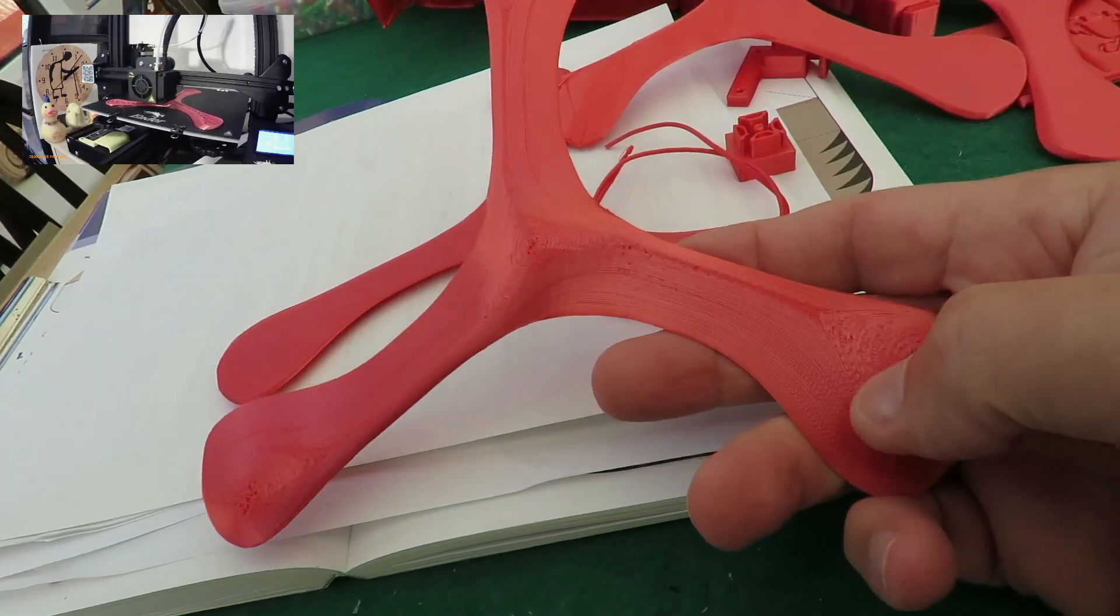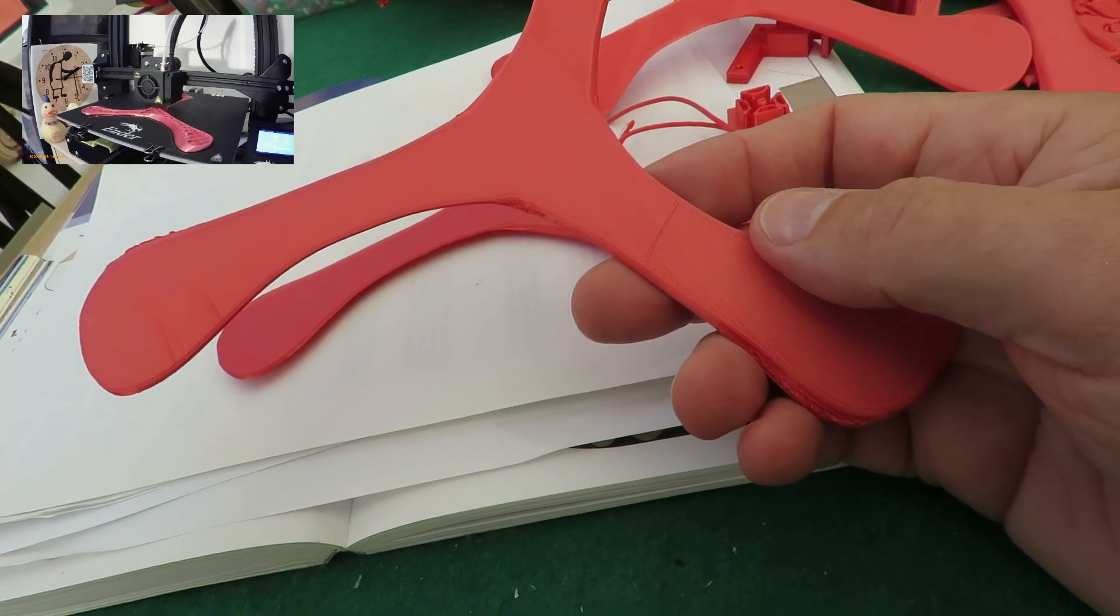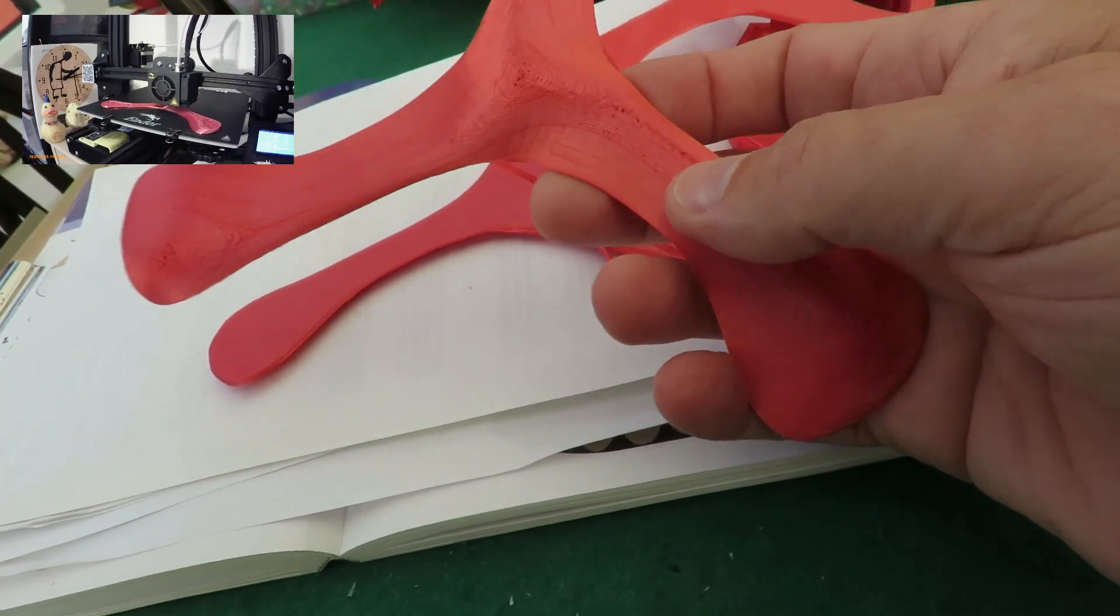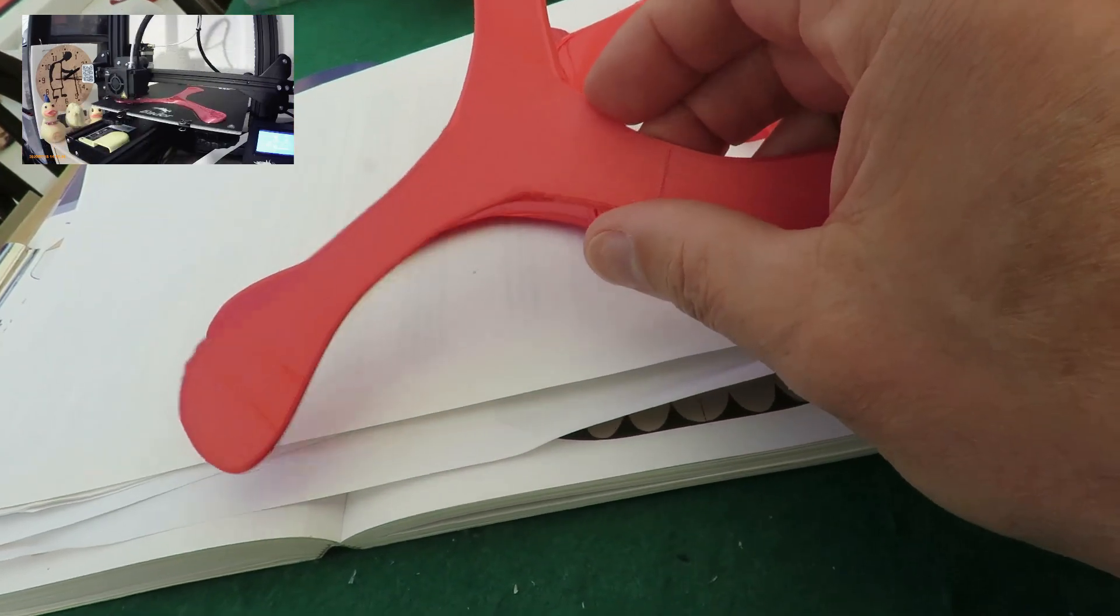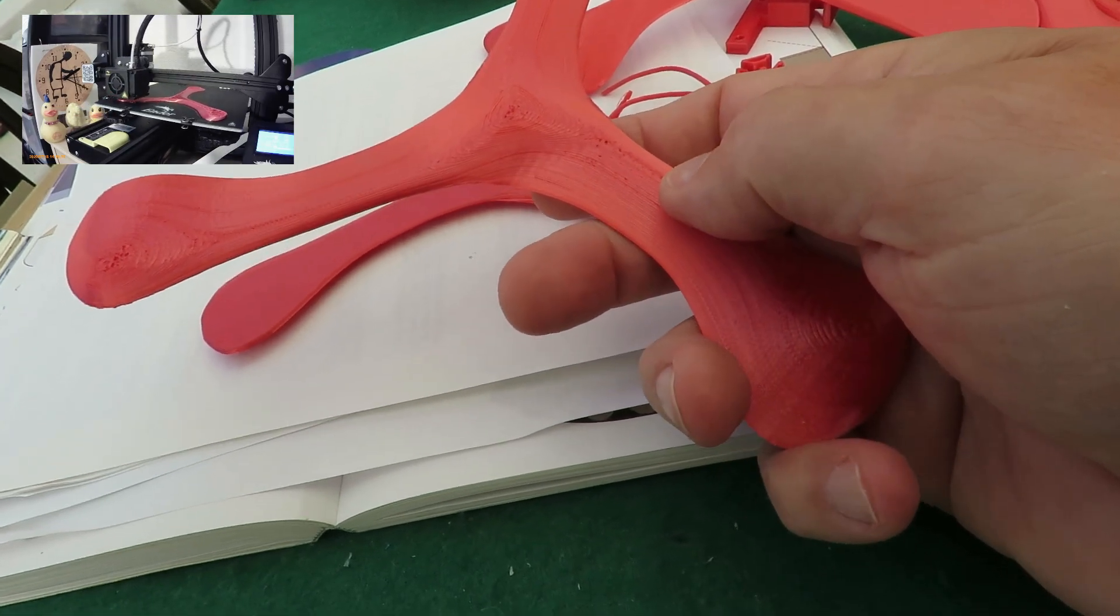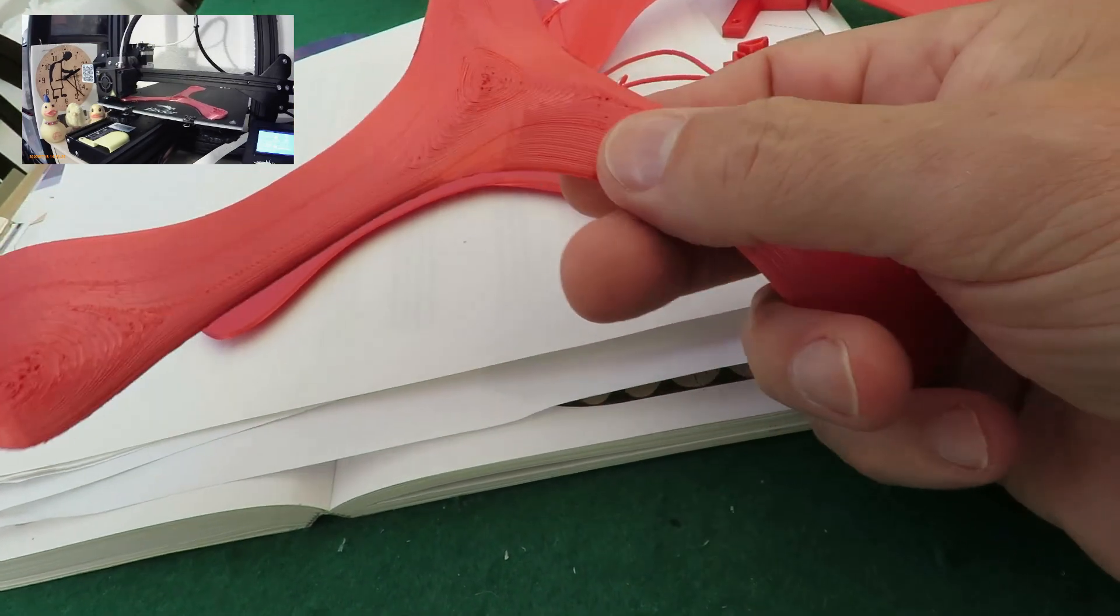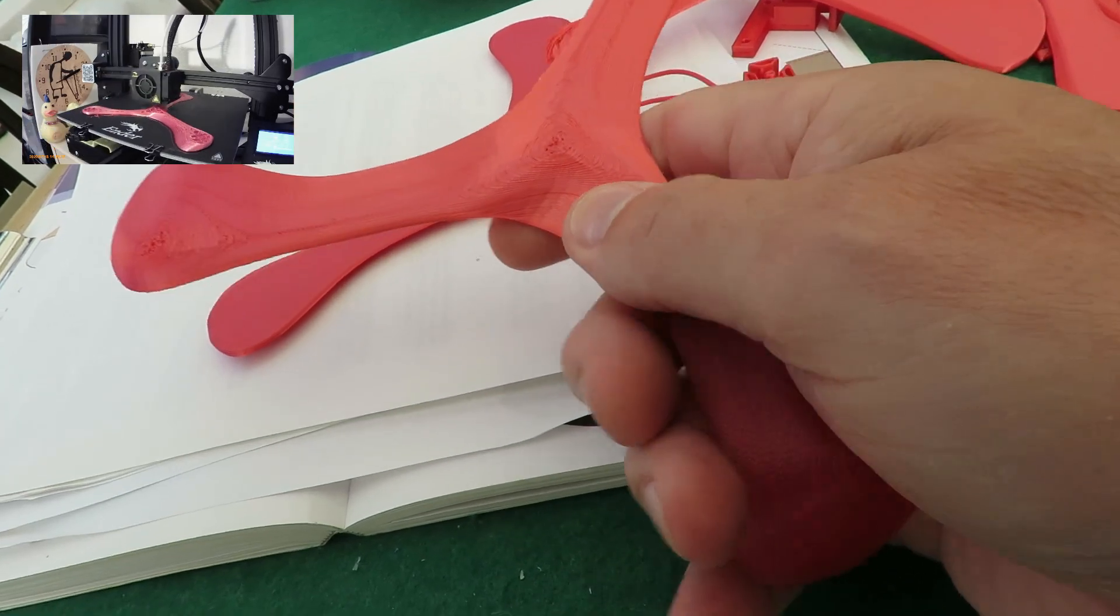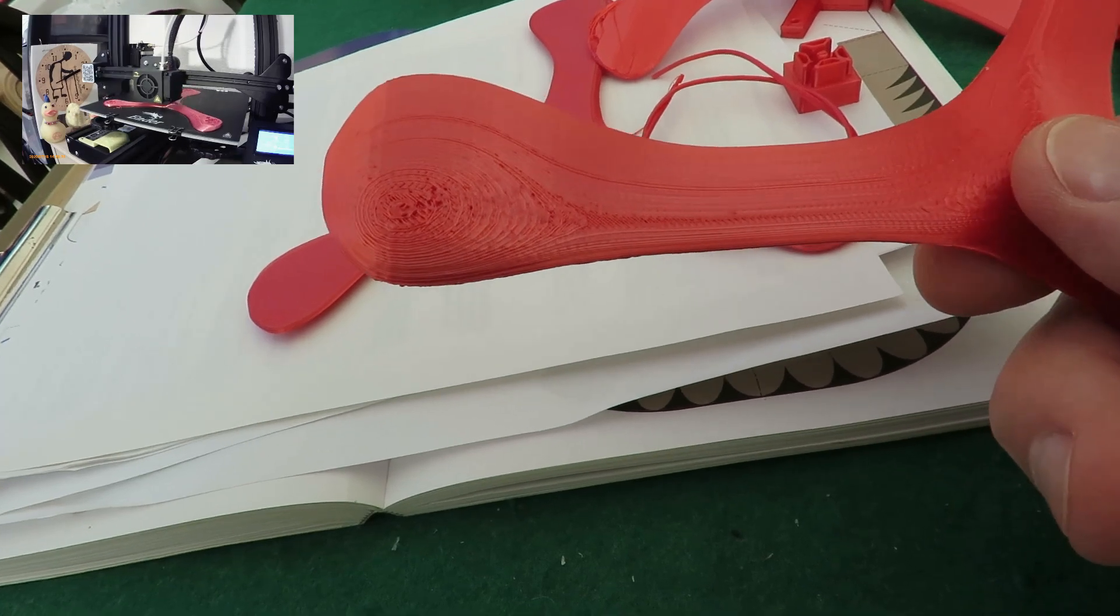And then this one. This was printed at 50% fill, 210 degrees temperature for the filament, 65 for the bed, and 50 speed. So that's sort of middle of the range with extra fill. And it's still a little bit like it's got air holes in it.